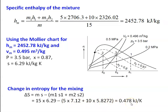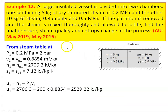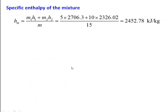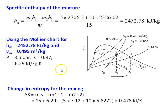Change in entropy of the mixing process: delta S equal to total mass into S3 minus M1 S1 plus M2 S2 equals 15 into 6.29 minus 5 into 7.12 plus 10 into 5.872 equal to 0.478 kilojoules per kilogram Kelvin. So the final pressure is 3.5 bar, final quality is 0.87, and change in entropy is 0.478 kilojoules per kilogram Kelvin.